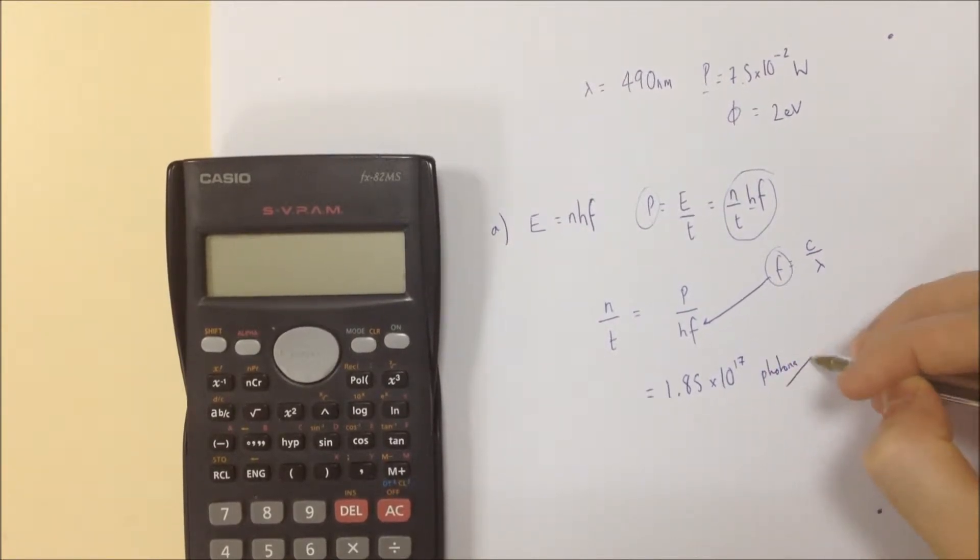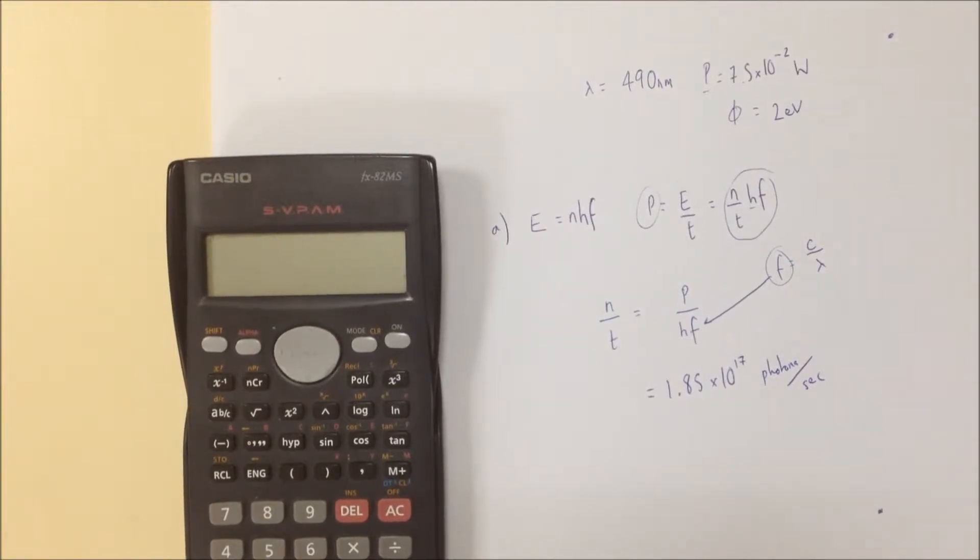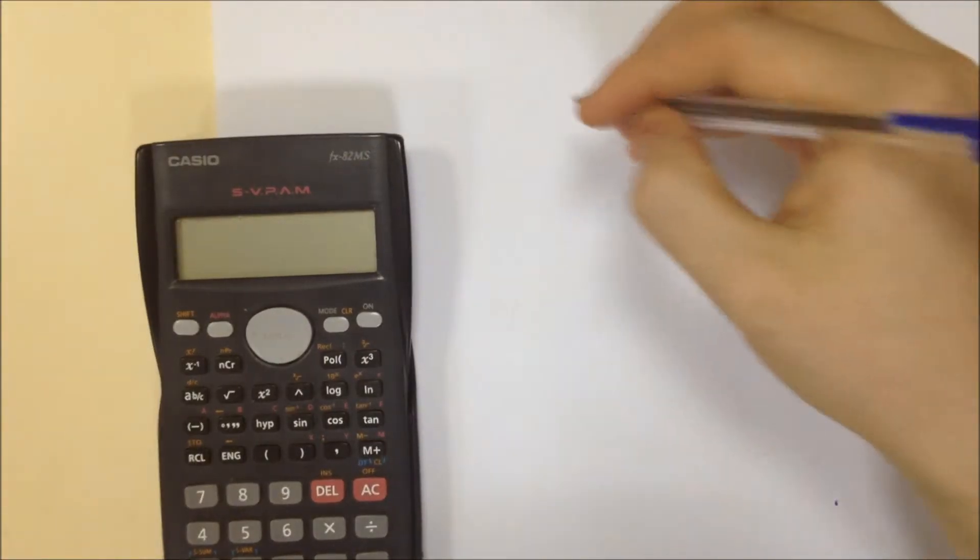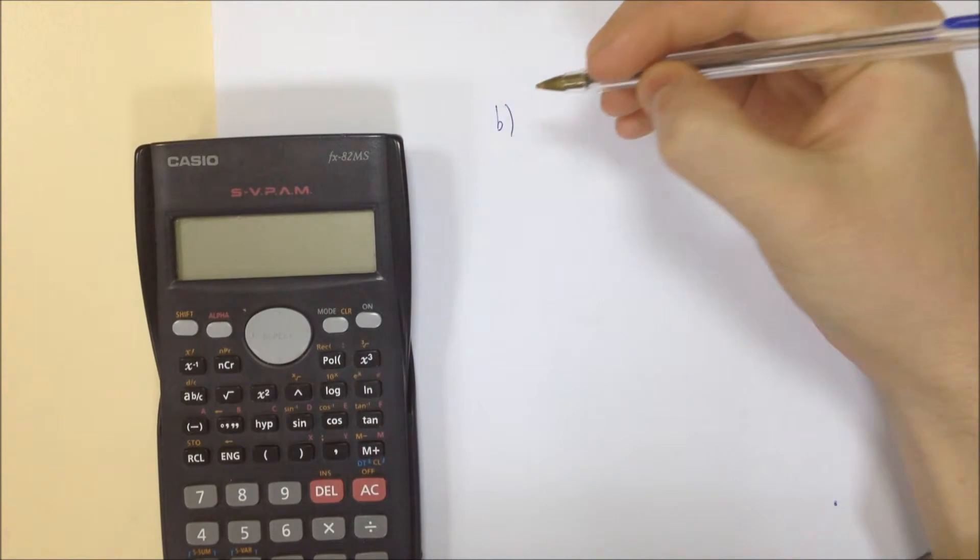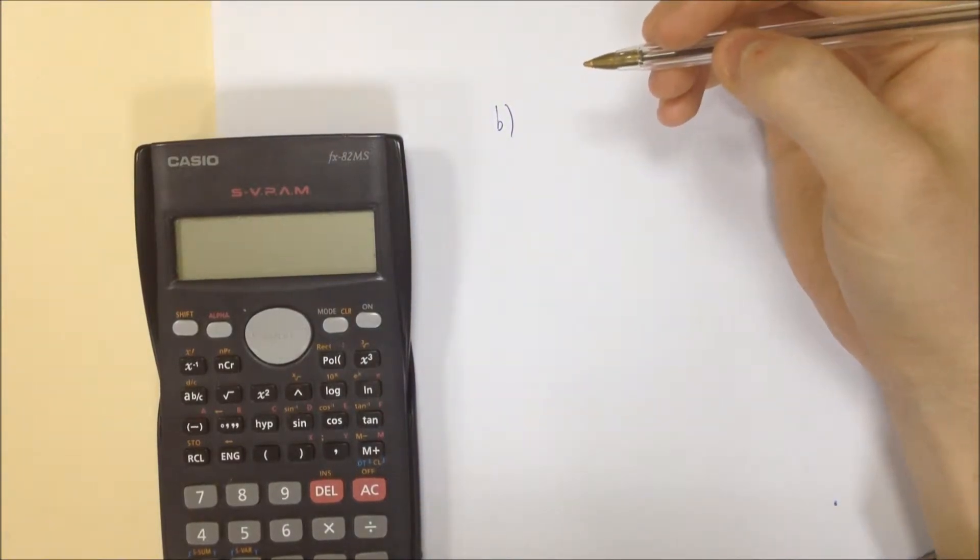Photons per second, which is what the question originally asked for. On to part B then. Part B said that if 10% of the photons result in an electron being emitted, what current is produced?